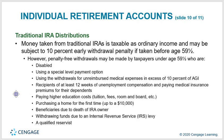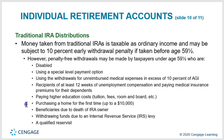Money taken from traditional IRAs is taxable as ordinary income and may be subject to a 10% early penalty if taken before age 59½. However, penalty-free withdrawals may be made by taxpayers under 59½ who are disabled, using a special level payment option, using withdrawals for unreimbursed medical expenses exceeding 10% of AGI, recipients of at least 12 weeks of unemployment compensation paying medical insurance premiums, paying higher education costs, purchasing a first home up to $10,000, beneficiaries due to the death of an IRA owner, or withdrawing funds due to an IRS levy or as a qualified reservist.